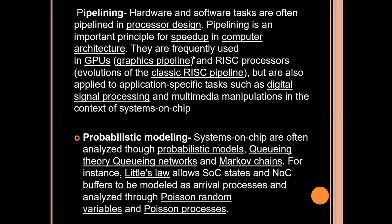The third methodology is probabilistic modeling. Systems on a chip are often analyzed through probabilistic modeling, queueing theory, queueing networks, and Markov chains. For instance, Little's law allows SoC state and NoC buffers to be modeled as arrival processes and analyzed through Poisson random variables and Poisson processes.